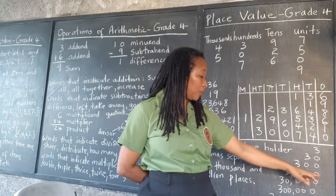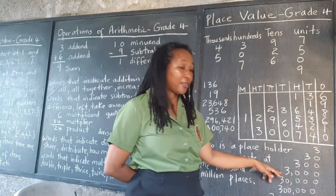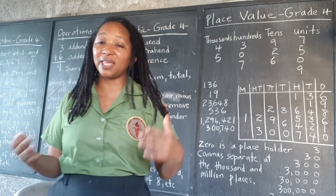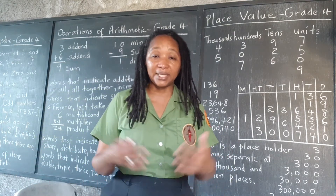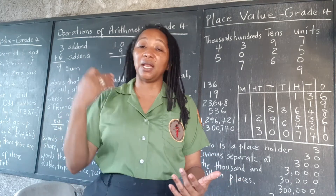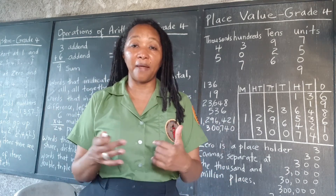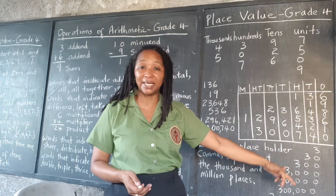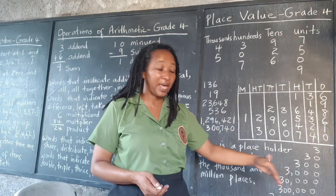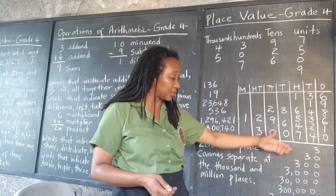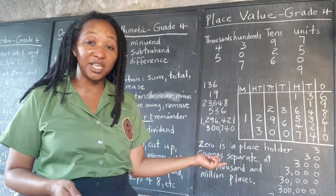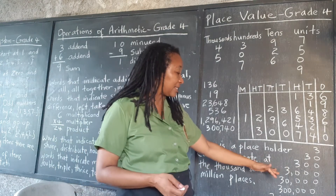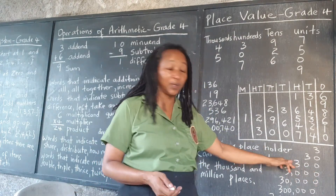Thirty has no units — three tens. Three hundred has no units, no tens. Three thousand has no units, no tens, no hundreds. So the zero, even though many persons might think of it as nothing, as emptiness, as void — in mathematics the zero is a very important digit, particularly as a placeholder. It makes a great difference between all these numbers. If we left out one of the zeros, we'd be in big trouble. If we were writing three thousand and left out one zero, we would end up writing three hundred.